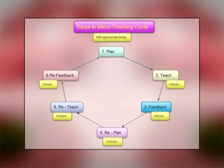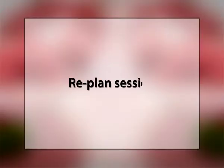Then, feedback. For the purpose of giving feedback to the pupil-teacher, either video recording is done or classmates note down critical comments on the observation schedule on the basis of their observation. These critical comments are analyzed after the teaching is over and feedback or suggestions are given to pupil-teachers on the basis of these points.